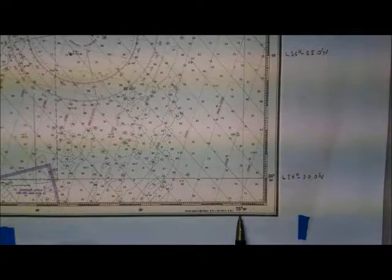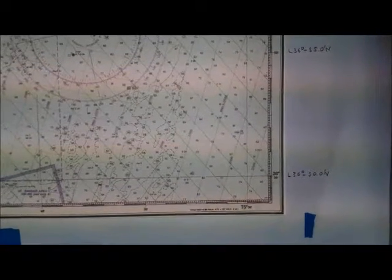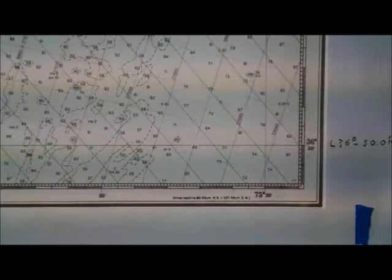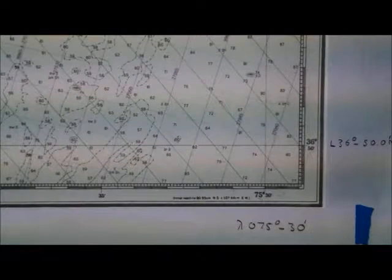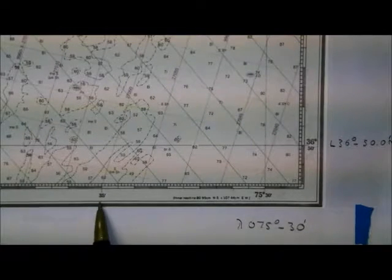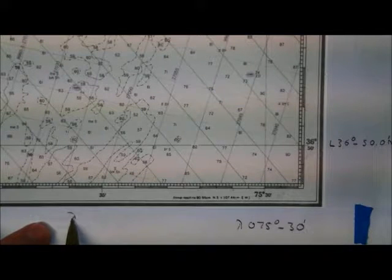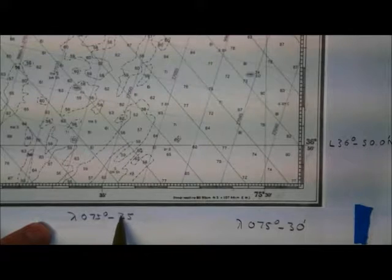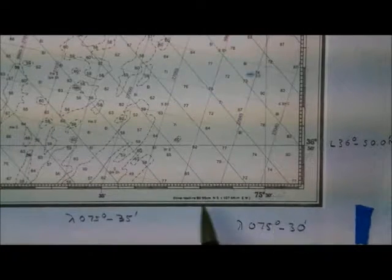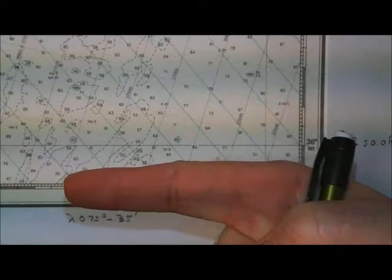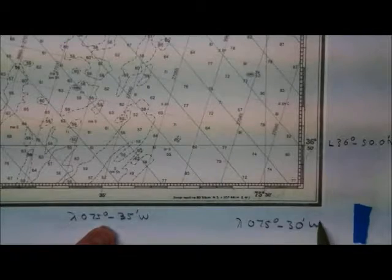On the longitude scale, we can see right here, let's zoom that down a little bit. On the longitude scale is 75 degrees 30 minutes. So we would write that longitude 075 degrees 30 minutes. Next printed one we see is 35. So we would write that longitude 075 degrees 35 minutes. And we can see as we go to the left, I'm going from 30 to 35 as I go that direction. So I must be in the western hemisphere. So we would label those west.